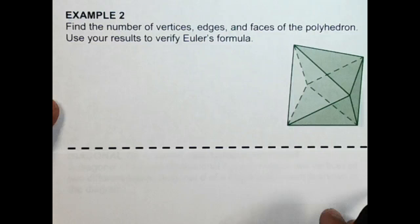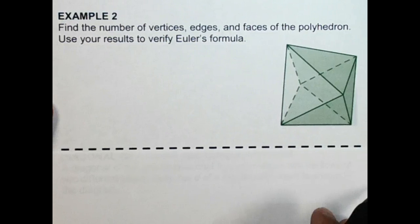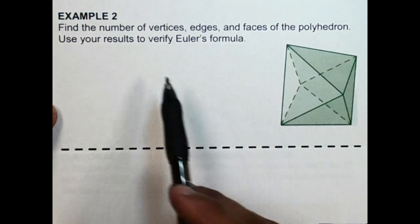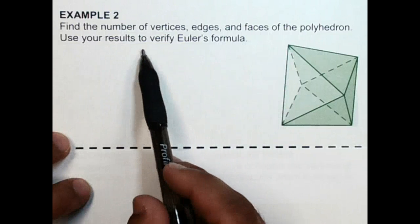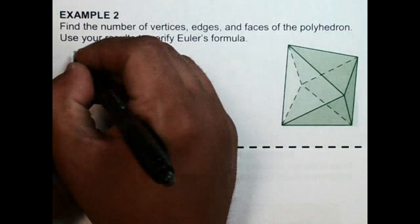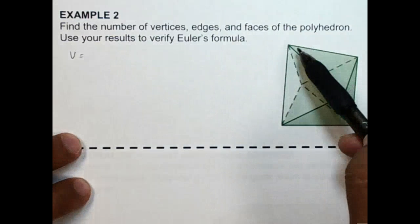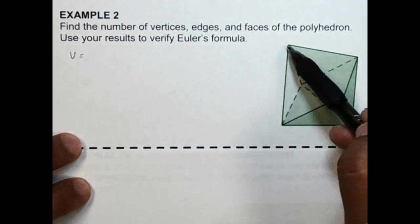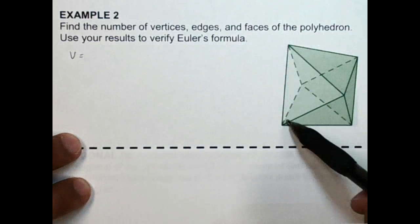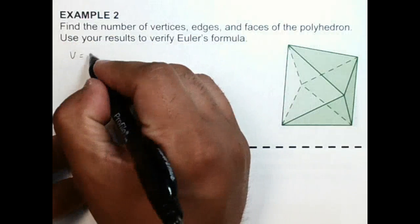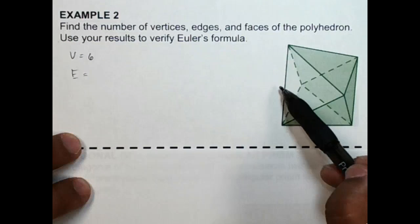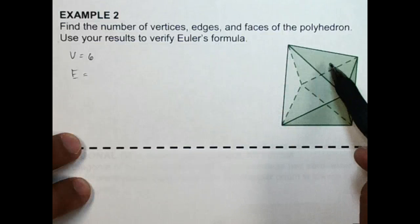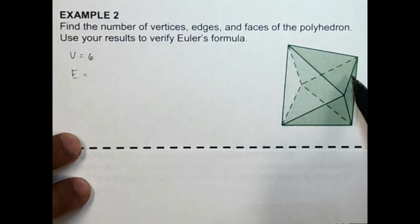All right, so here's another example. Find the number of vertices, edges, and faces of the polyhedron, and use the results to verify Euler's formula. So if I look at vertices, I have to count all of these points: 1, 2, 3, 4, 5, 6. Edges: 1, 2, 3, 4, 5, 6, 7, 8, 9, 10, 11, 12.